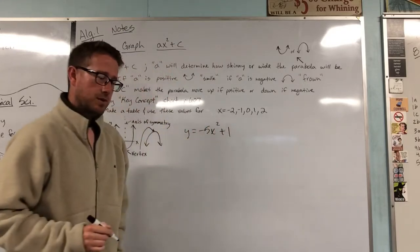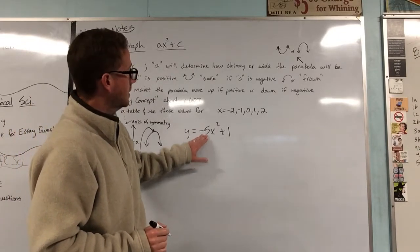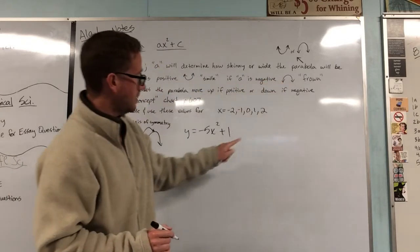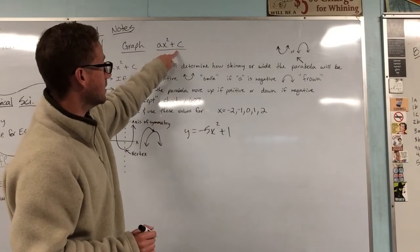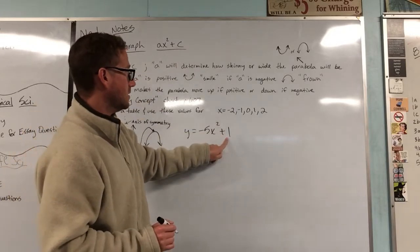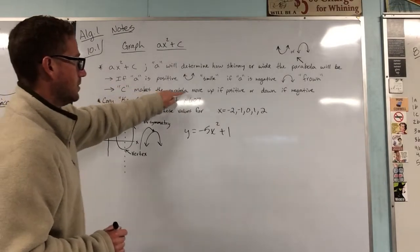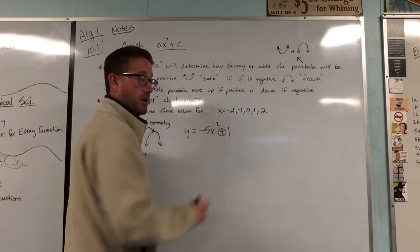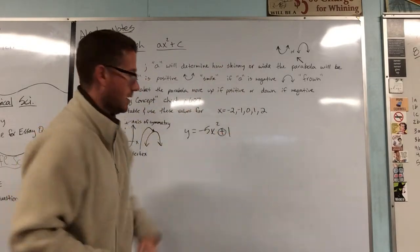That's going to be y equals negative 5 x squared plus 1. All right. The reason why I wanted to do this is to show you again what happens with negative coefficients. Negative a is going to make a frown, so we already know that. But we haven't dealt with a c value like we had here up in our title. So this value right here, the c makes the parabola move up, if positive. You'll notice that's positive. If it were a negative, it would make the parabola move down.